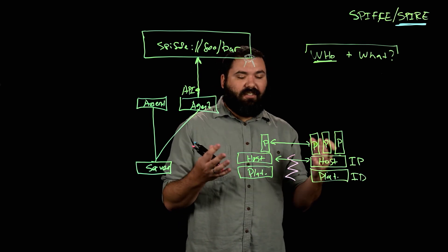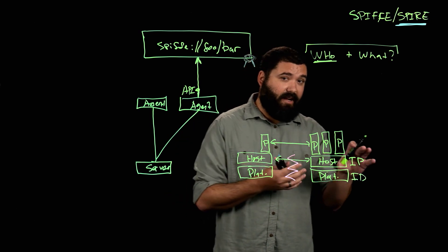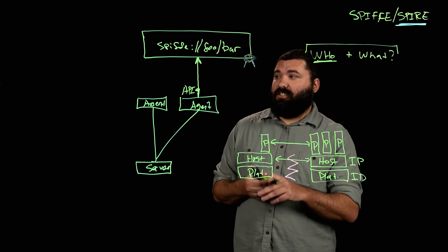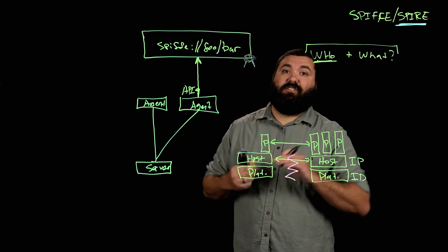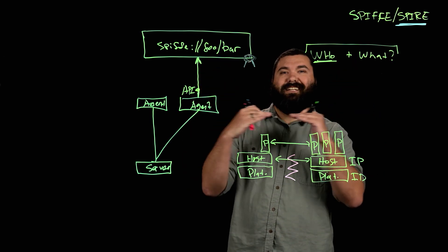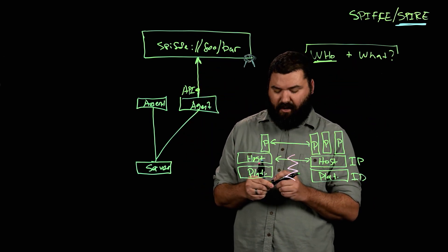So the end result is we have established this kind of identity plane if you will, which serves as a very solid foundation if you are trying to build a zero trust network. You need this identity plane underneath. That is what Spiffe and Spire provide.